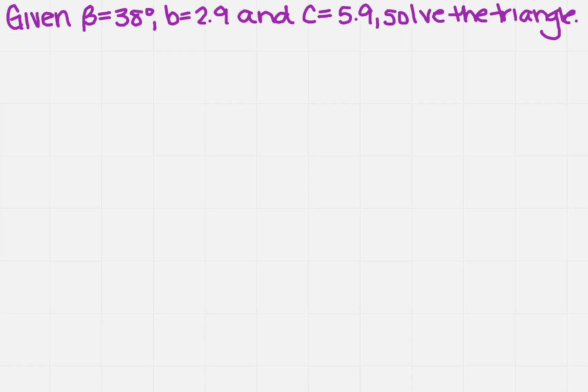Given beta equals 38 degrees, B equals 2.9, and C equals 5.9, solve the triangle.